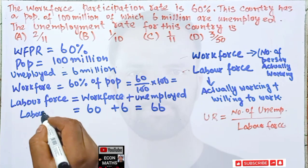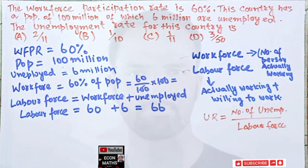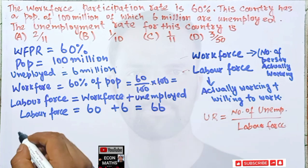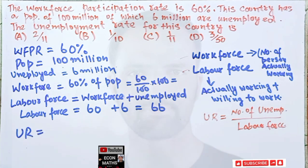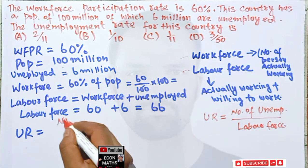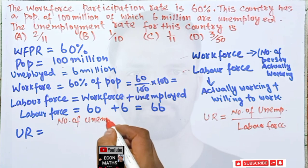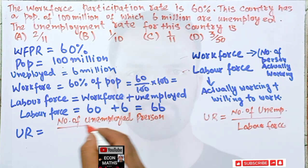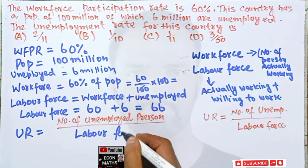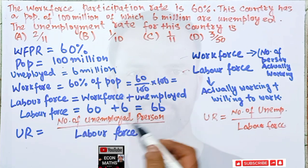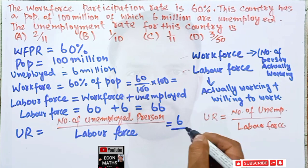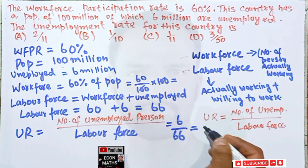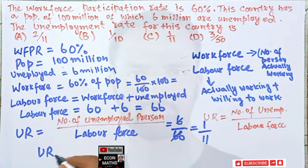Our labor force is 66 million. The unemployment rate equals number of unemployed divided by labor force. The number of unemployed persons is 6 million and our labor force is 66 million. That gives us 6/66, which simplifies to 1/11. So the unemployment rate in this country is 1/11, meaning option C is correct.